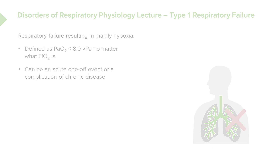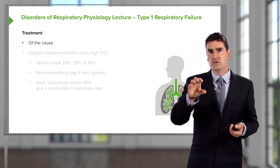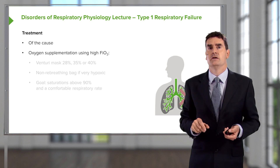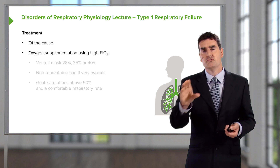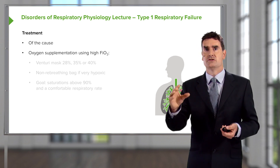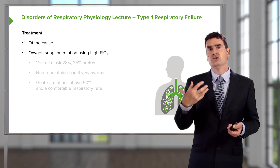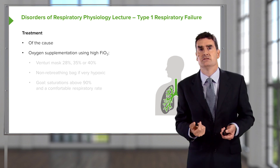Treatment depends on the cause. For example, if somebody comes in with pneumonia and hypoxia as a consequence of type 1 respiratory failure, you clearly treat the pneumonia. The key discussion today is about oxygen — how we use oxygen in patients with type 1 respiratory failure. The goal is to correct the hypoxia, and we can use as much oxygen as necessary. We give oxygen in a controlled fashion so we know what percentage of inhaled oxygen the patient is receiving.